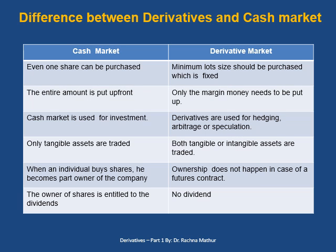To summarize the differences: in the cash market, you can buy any number of shares, whereas in derivatives you must buy only the lot size decided by the exchanges. In the cash market you pay the full amount; in derivatives only the margin money. The cash market is used for investment purposes, while derivatives are used for hedging, arbitrage, and speculation. Only tangible assets are traded in the cash market, whereas in derivatives both tangible and intangible assets are traded. In the cash market, buying shares makes you a part owner of the company; no ownership exists in the derivative market as contracts expire. In the cash market, shareholders are entitled to dividends; in derivatives there is no dividend.